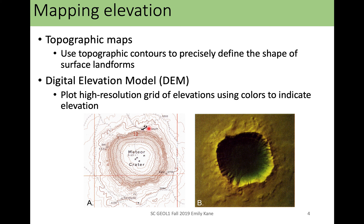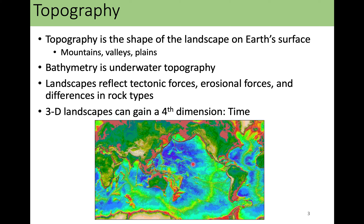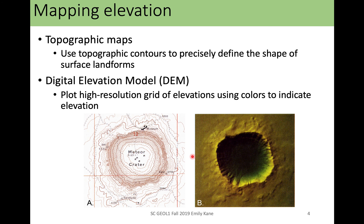A topographic map is like this one here on the left, where we have all of these different contour lines. We have topographic contours to tell us the different shape and the different elevations of things on the surface. A DEM is actually more like a grid and it uses colors — it's more like a picture of the elevation. This might be something you're a little bit more familiar with seeing. A DEM does not have contour lines; it actually uses color to show you the different elevations. What we're going to do today is focus on our topographic maps, which use topographic contours.